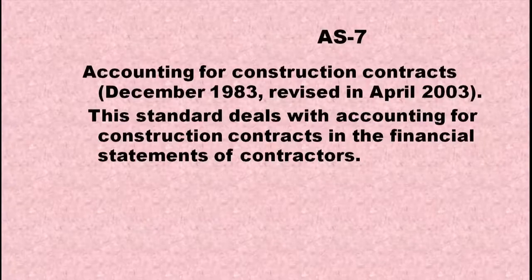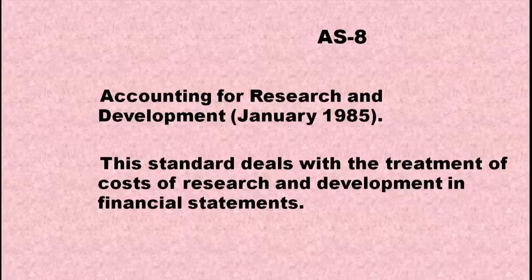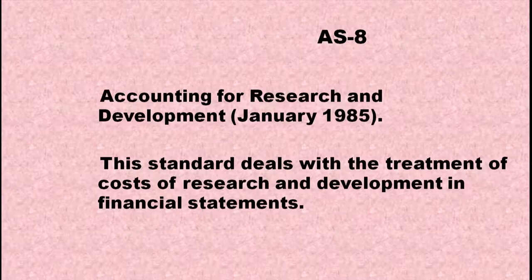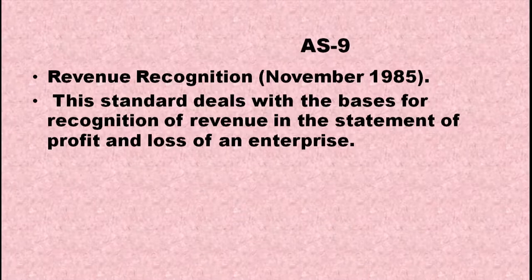AS7 deals with accounting for construction contracts in the financial statements of contractors. AS8 deals with the treatment of cost of research and development in financial statements. AS9 is about revenue recognition — it deals with the basis for recognition of revenue in the statement of profit and loss of an enterprise.